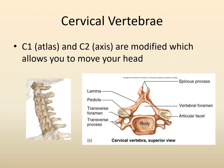The cervical vertebrae are abbreviated C and numbered starting from the top. The first two have special names: C1 is known as the atlas and C2 is known as the axis. These are the only two with special names. Their modifications allow you to move your head up and down — like a yes motion — or left to right.